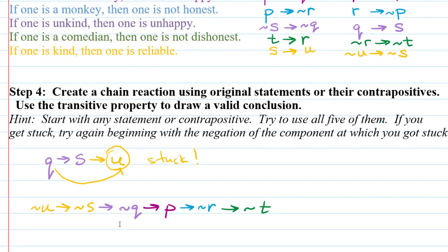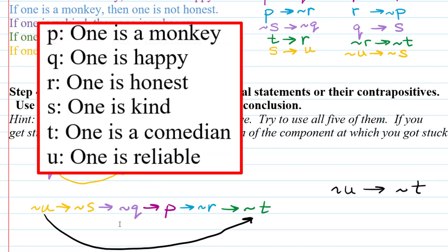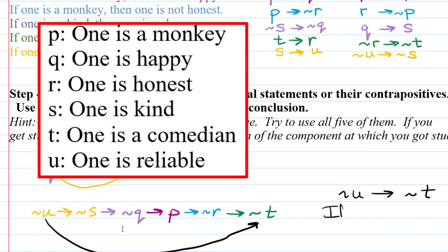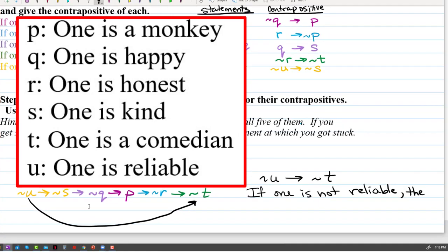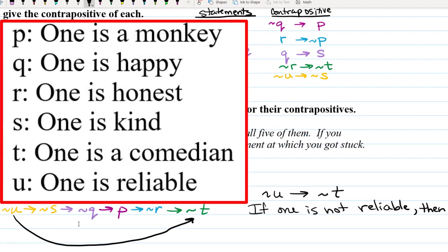All right. So we have that not U by the transitive property implies not T. If not U, then not T. Now U was one is reliable. So this would be if one is not reliable, then not T. And T was one is a comedian. So then one is not a comedian.